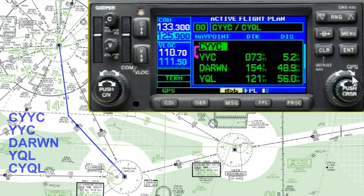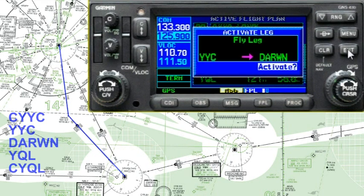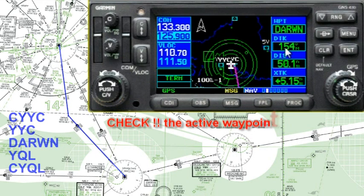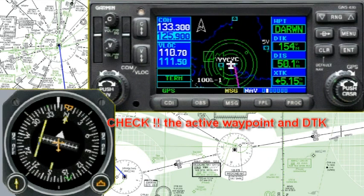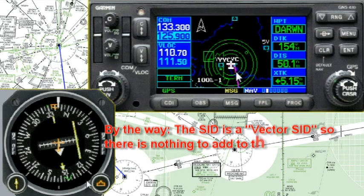But if we look at the SID procedure, that's not really where we're going. We're going to be intercepting Victor 2-1, which is the leg from the Calgary VOR to Darwin. So we want to activate that leg. The shortcut is direct, direct, enter — or you go menu, activate leg, enter. That's the same number of clicks either way. Now Darwin is the active waypoint, desired track is 154, so reset your HSI to 154 and put your heading bug on the runway heading — runway 34. We're good to go.